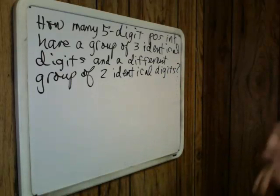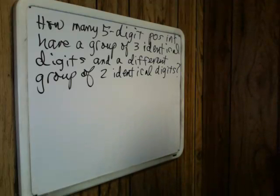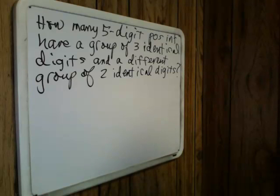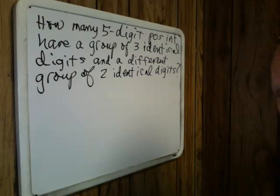There's always confusion about order when you're doing card problems, coin problems, or any counting problem. I like to work with five-digit, four-digit, or three-digit integer problems because there's never any confusion about order. For example, 3-3-2 is not the same number as 3-2-3.